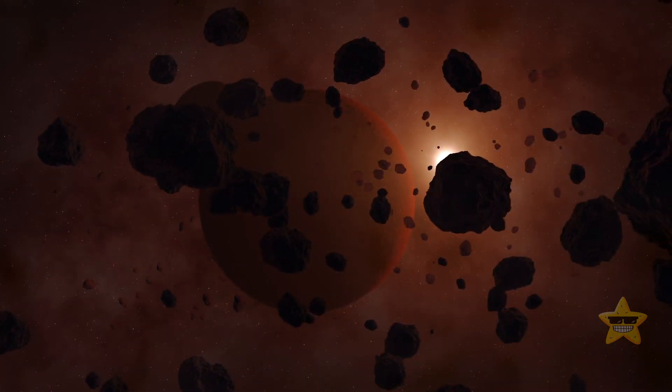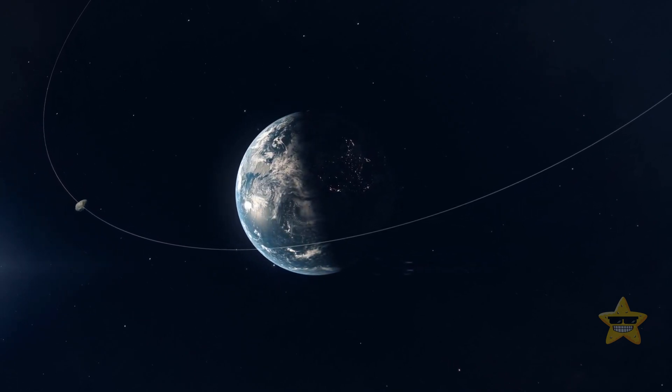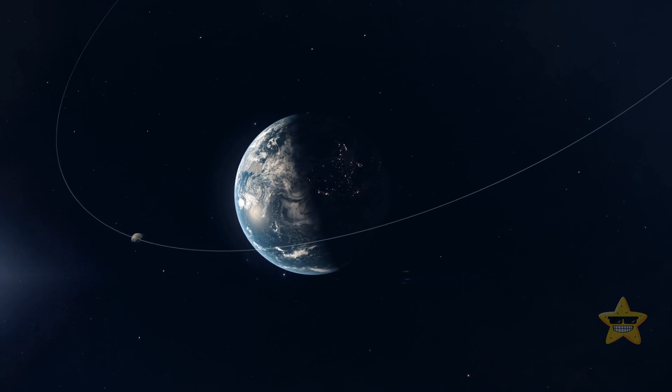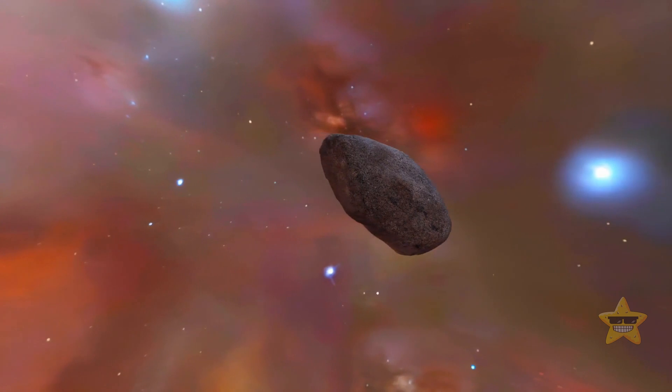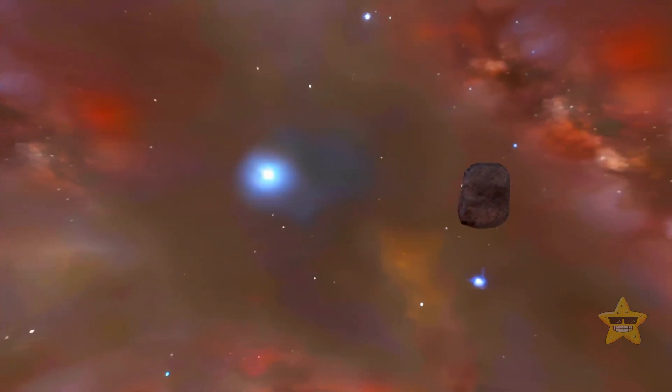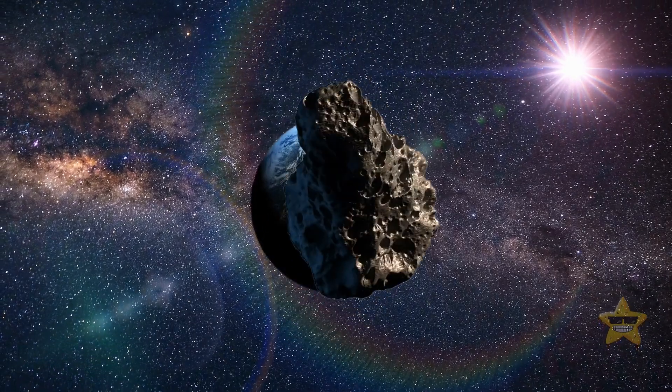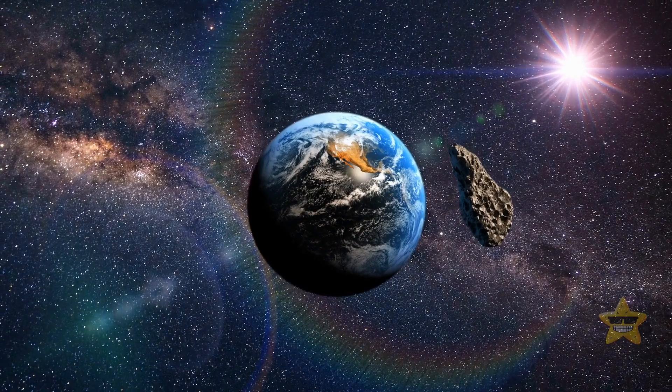Out of more than 1 million asteroids astronomers know about, it was only the second one to orbit our planet. Called 2020 CD3, it became our temporary mini moon. It wasn't going to stay with Earth for long though. The asteroid is following a random orbit and is slowly drifting away.